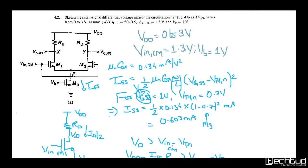We want to plot the small signal differential voltage gain. Vdd varies from 0 to 3V, Vin_common_mode is 1.3V, Vb is 1V, and μnCox is given as 0.134 mA/V². Iss is calculated as (1/2)·μnCox·(W/L)·(Vgs3−Vt3)², where Vgs3=1V and Vt3=0.7V, giving Iss = 0.603 mA. So the half-current Iss/2 = 0.3015 mA flows in each branch when all transistors are in saturation.